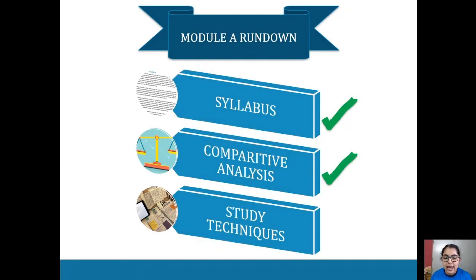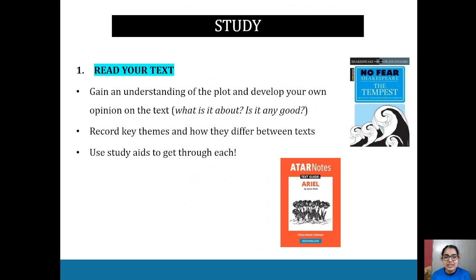Now let's have a look at our study techniques. How do we study for it? Firstly, read your text. Very important. Gain an understanding of the plot, develop your own understanding and your own opinion on the text. What is it about? Is it any good? Record key themes and how they differ between texts, and use study aids to get through it. You're allowed to use things like No Fear Shakespeare. You can watch a lot of Shakespeare plays on YouTube as you're reading the text—that always helps. It's not always easy to understand the language, that's all good. I've got eight notes text guide here. I'll be talking about Ed Unlimited and you can find the text ads—there's physical copies available too. Using study aids can really help.